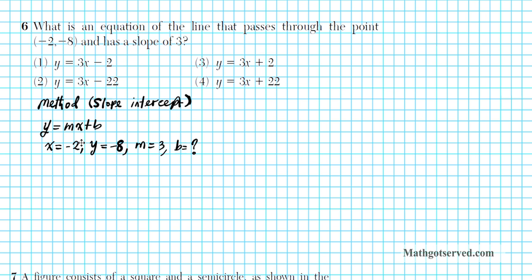We'll plug in the values of x, y, and m into the slope-intercept form of the equation of a line. We'll find b and then plug m and b back into the equation to write the equation of the line in slope-intercept form. So let's find the value of b by plugging in: negative 8 equals 3 times negative 2 plus b.